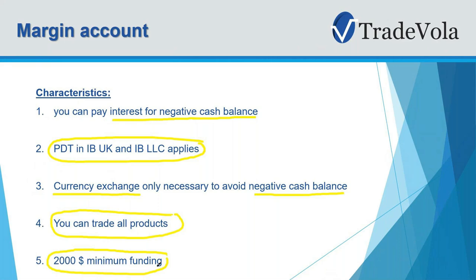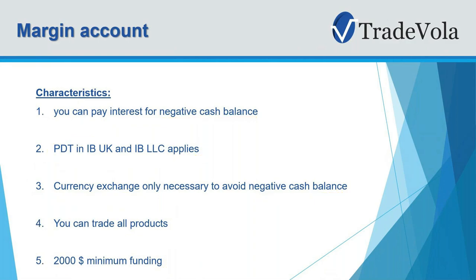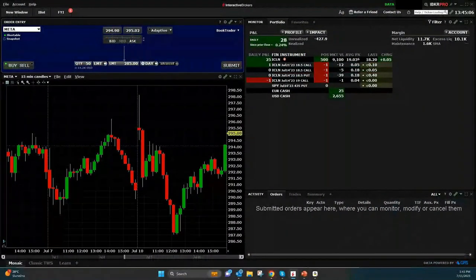If you want to change back from margin to cash, make sure that you don't have any products related to margin accounts still open in your portfolio — for example, some futures contracts or special option strategies. The downgrade won't be possible until you close those positions. Once those are closed, you can downgrade your account back to cash.